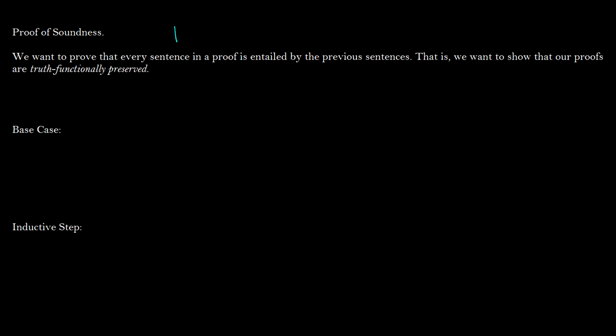Welcome to the big long proof of soundness in propositional logic. Today we're going to prove that if gamma proves alpha, then gamma entails alpha. Basically what we're saying is that if it's true on the k-th step that gamma entails alpha, then if we have a proof of the next step, then it entails the next step.